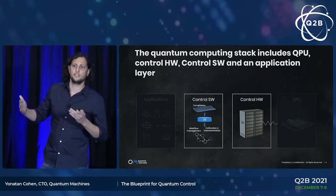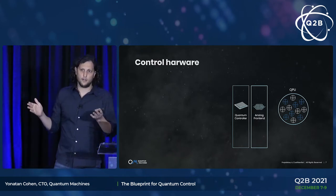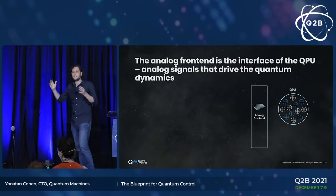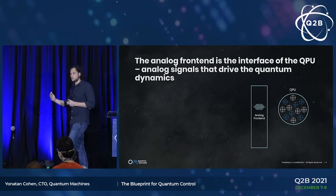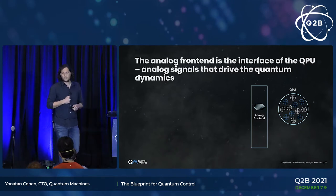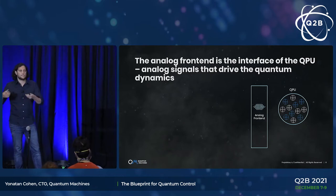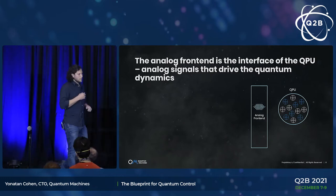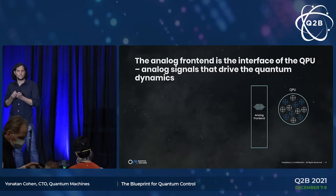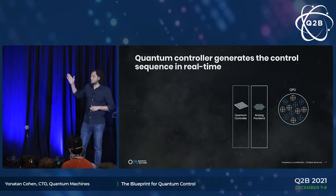Let's dive a little bit deeper into these two layers of the stack. The control hardware can be split into two main components: the analog front-end and the quantum controller. The analog front-end is the interface to the QPU — it generates all the signals that drive the dynamics of the QPU and measures the qubit states. This includes all the digital-to-analog converters, attenuators, amplifiers, cables, and sensors that measure the quantum system. This layer needs to be highly scalable and provide clean signals with good signal integrity that do not limit fidelity.